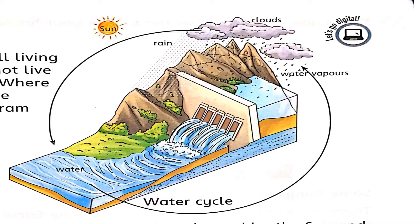Do you know what the water cycle is? The water cycle means the movement of water on Earth. The water of lakes, seas, rivers, and streams is heated up by the sun and moves up in the form of water vapors. When the water vapors cool down, they form into clouds, and then clouds form into rain or snow, and the water comes down again in the form of water.